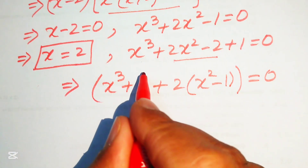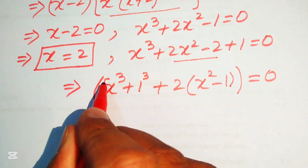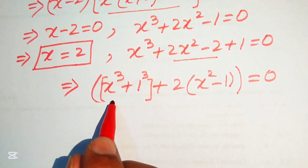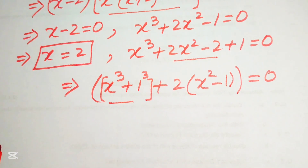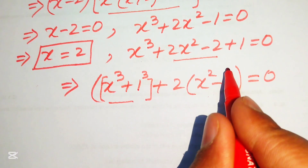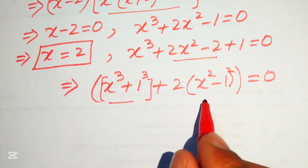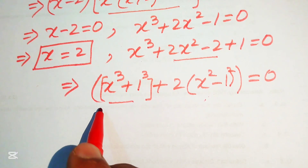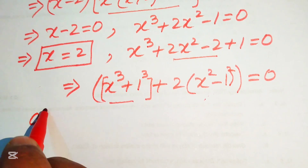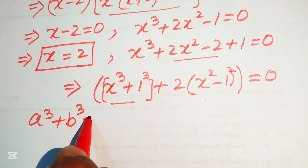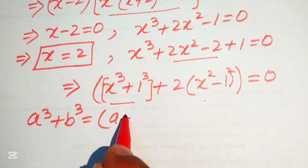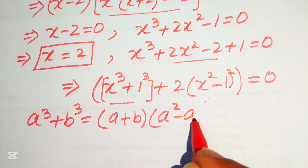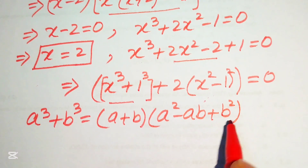We write 1 as 1³ and apply the sum of cubes formula: a³ + b³ = (a + b)(a² - ab + b²). For x³ + 1³, this gives (x + 1)(x² - x + 1). And for the second term we apply the difference of squares identity.